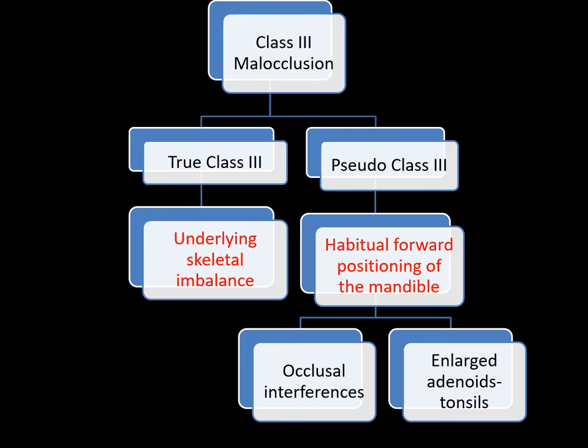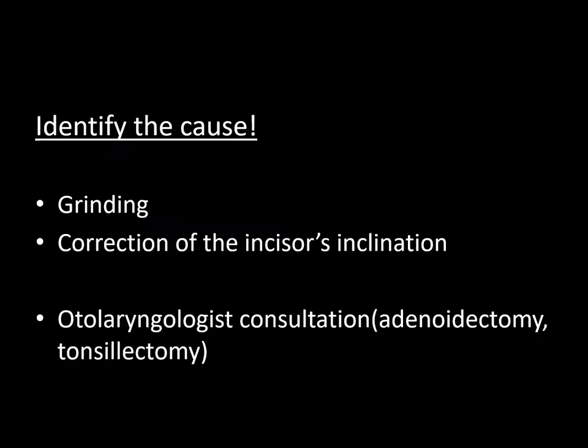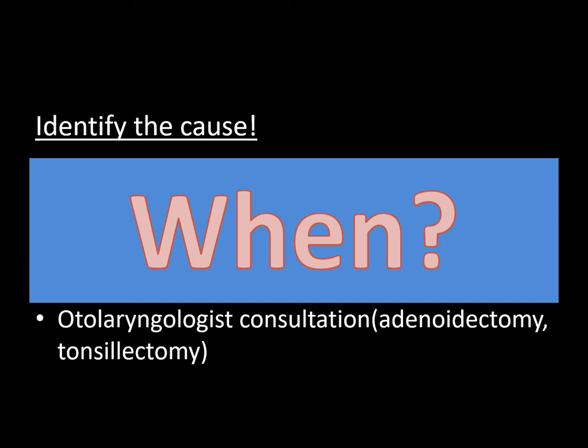If left untreated, pseudo Class 3 cases may lead to true Class 3 formation since morphology adapts to function. We can grind to correct the occlusion, correct the incisor guidance, or request an ENT consultation to treat pseudo Class 3 cases. Treatment should start as soon as possible since habits may lead morphology to change. As Moyers says, a pseudo Class 3 occlusion is a positional malrelationship with an acquired neuromuscular reflex, so the position of the mandible should be carefully checked. If the patient can bring the mandible backward, that might be a sign of a functional shift.